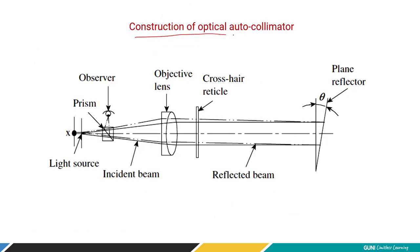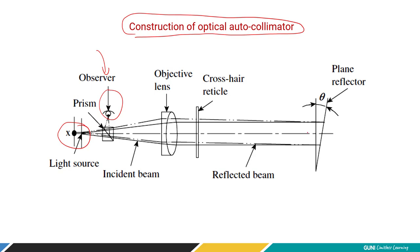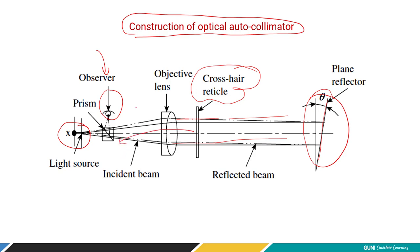In the construction of the optical autocollimator: there is a light source, an eyepiece from which you can observe the reflected image, and a prism used so you can observe images coming from the mirror surface or plane reflector. Light initially passes through the objective lens and travels as parallel beams. These parallel beams are reflected from the inclined surface. There is a crosshair object, and this crosshair image is taken back after reflection and observed. If the surface is perfectly perpendicular at 90 degrees with no angular deviation, the image will be perfectly observed in the eyepiece.